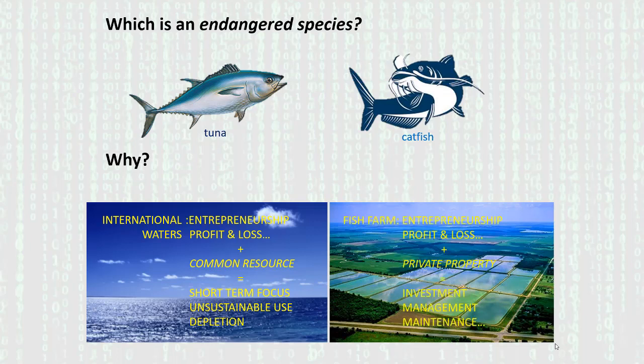With international waters, entrepreneurship and profit-and-loss in the tuna fishing business applied to a common resource gives the fishing industry a short-term focus, leading to unsustainable use and depletion. Whereas fish farms — which are private property — entrepreneurship and the profit motive lead to investment, management, and maintenance of the resource so businesses can be sustainable over time. No catfish farmer would overfish his own ponds, because then he couldn't sustain the business into the future. If you can privatize a resource, you can often end the tragedy of the commons.